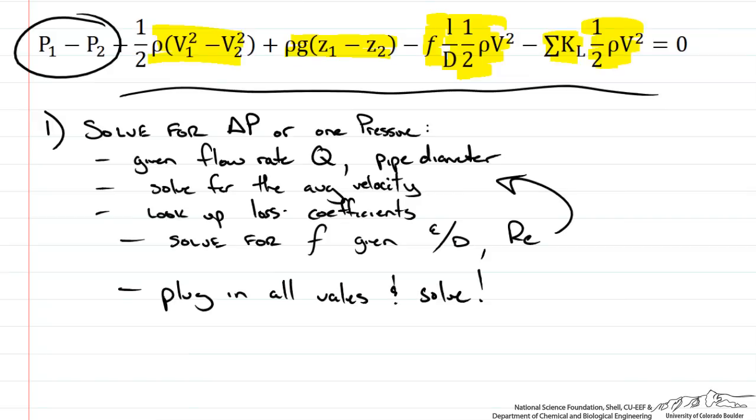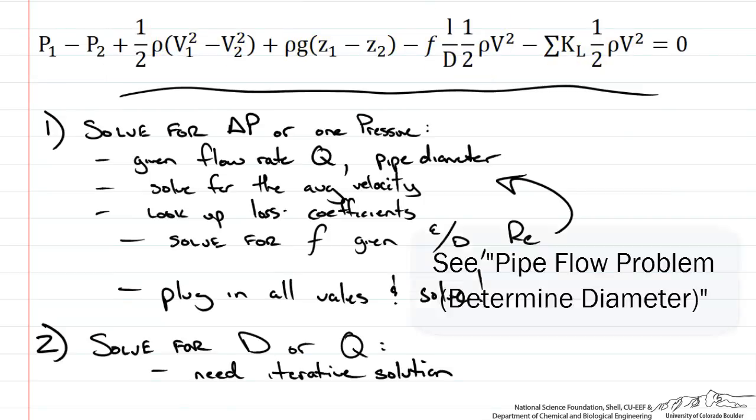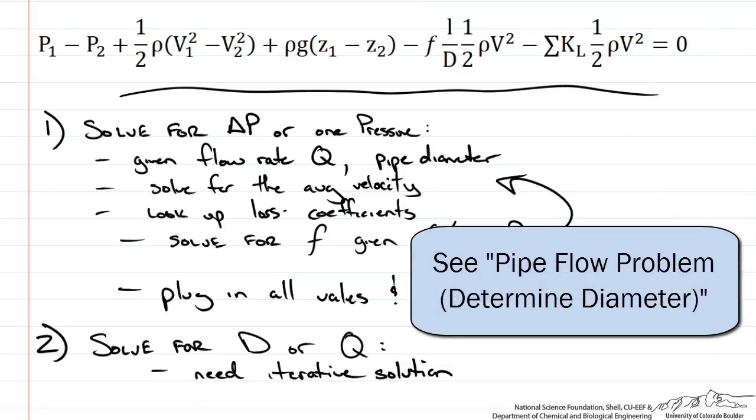You also imagine that we might have to solve for Q the flow rate or the pipe diameter D based on a pressure drop. Now this becomes a little bit more tricky since it requires an iterative solution. And we will go through this in another screencast demonstrating different examples of these pipe flow type problems.